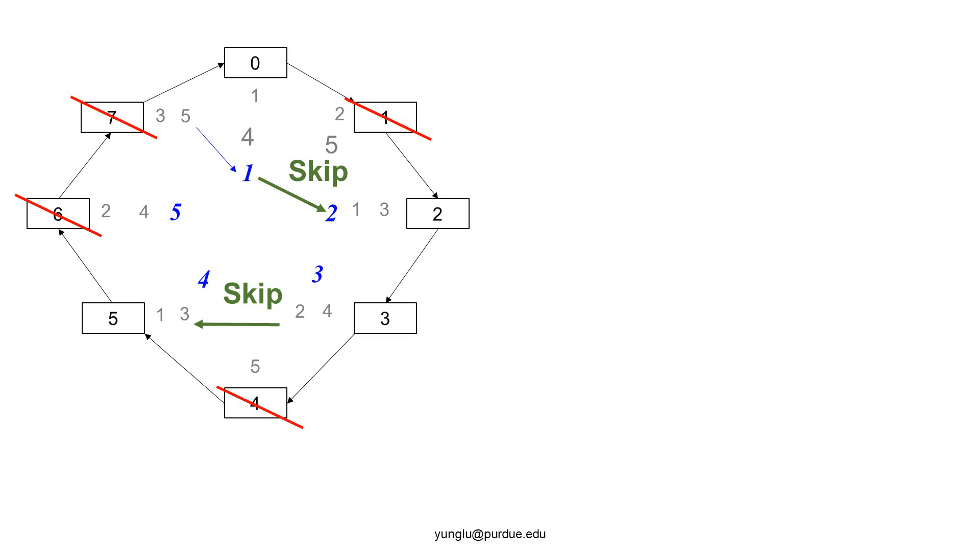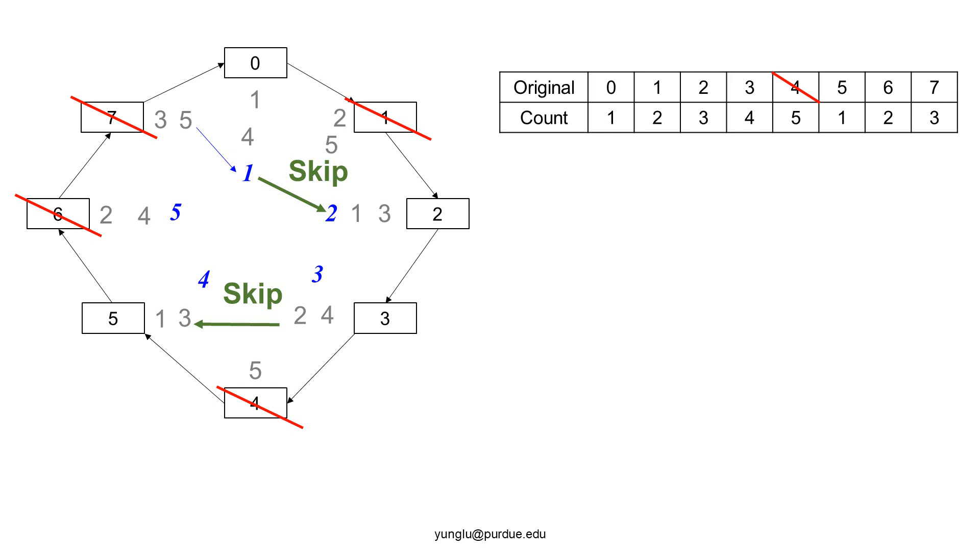This slide uses a different representation showing how this game is played. We represent the people with indexes 0, 1, 2, as an array. The top row shows the indexes. The bottom row shows the count from 1, 2, 3, 4, to 5. The first removed person has index 4.